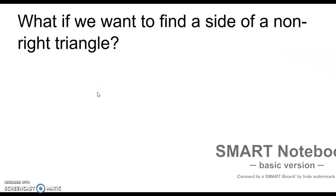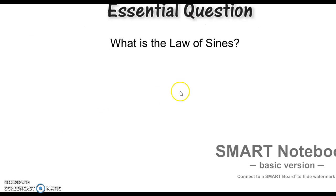What if we want to find the side of a non-right triangle? We've been talking about how before we've always used right triangles. But what if we have a non-right triangle but we want to find the side of it? If it was a right triangle we could use the Pythagorean theorem, but if it's not right we can't use that.